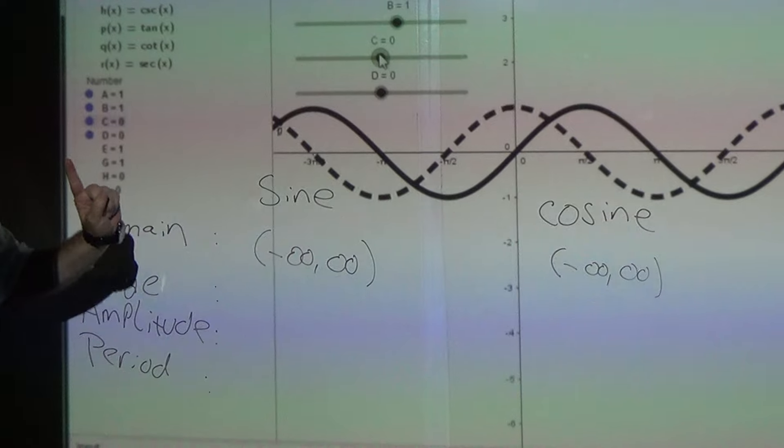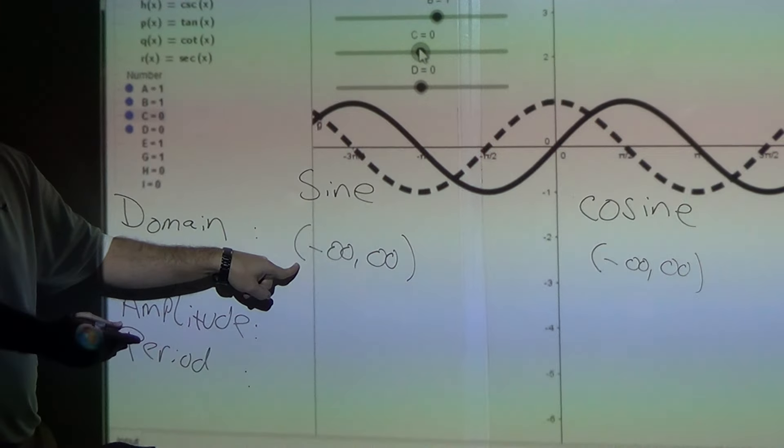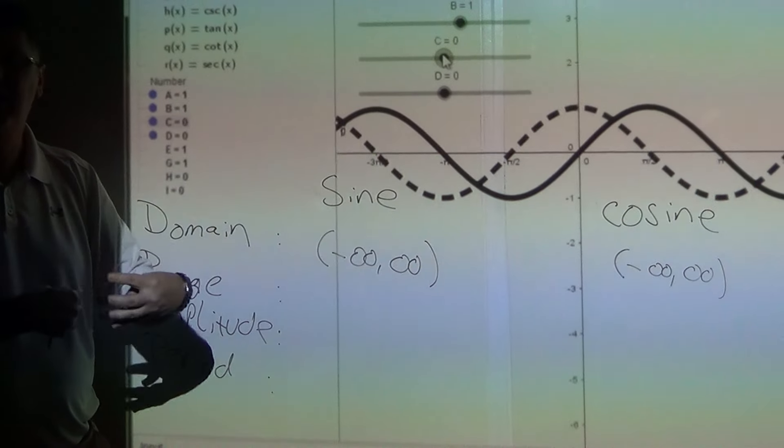Cosine is going to have the same domain from negative infinity to infinity. Now, in class, we talked about interval notation. The parentheses here means it does not touch infinity because you can't touch infinity. It can't be included.